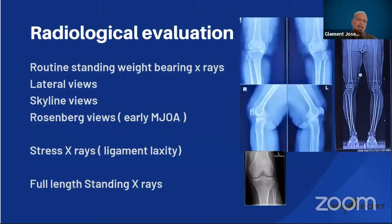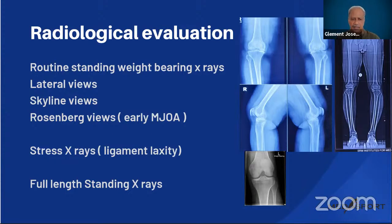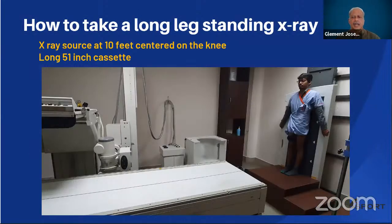For radiological planning, apart from routine weight-bearing X-rays, lateral views and Schuss views, Rosenberg views can show early medial compartment OA. Stress X-rays may be needed to identify ligament laxity. Most importantly, one must obtain full-length standing X-rays. In our institution, the patient stands at around 10 feet from the X-ray source.